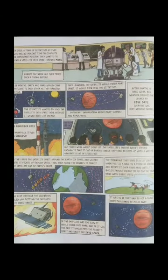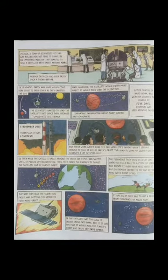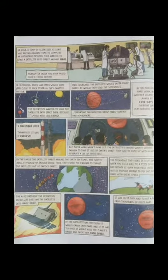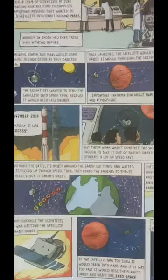Students, we can see in these images: scientists, planets, satellites, space, rockets, Earth, and people. It is easy. So students, India sent a satellite to Mars — we will read the whole theory through these images. Okay, let's read this stanza.